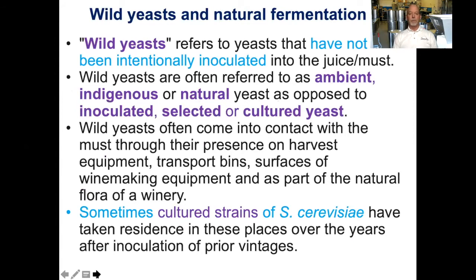Wild yeast refer to yeast that have not been intentionally inoculated into the juice or must. They are often referred to as ambient, indigenous, or natural yeast, as opposed to inoculated, selected, or cultured yeast. Wild yeast often come into contact with a must through their presence on harvest equipment, transport bins, surfaces of winemaking equipment, and as part of the natural flora of a winery. Studies have shown that S. cerevisiae is the main genus found in wineries; despite efforts to thoroughly clean the winery, it is still the most prevalent genus and contributes most to natural or indigenous yeast cultures.